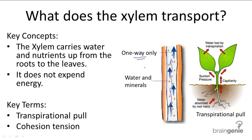Instead, the water is pulled up through transpirational pull and cohesion tension. Transpiration is the evaporation of water from the plant, as shown in this diagram here. If you remember the properties of water, water molecules have strong cohesion with each other — in other words, they stick together well. So when the water molecules at the top of the plant are pulled through the leaves during transpiration, the other water molecules attached to them below will get pulled up as well. You can sort of think of this as like a magnet and paper clips — if you attach a magnet to one paper clip and slowly pull it up above a pile of paper clips, the other paper clips will follow along in a chain.